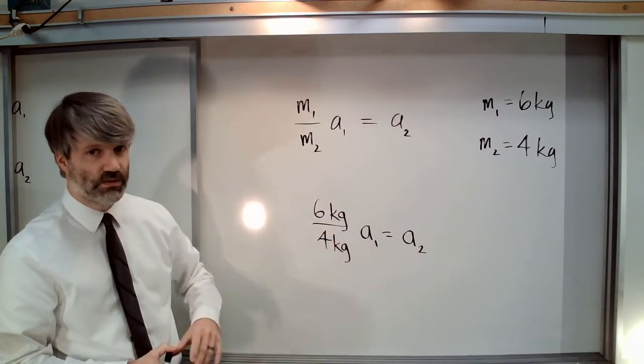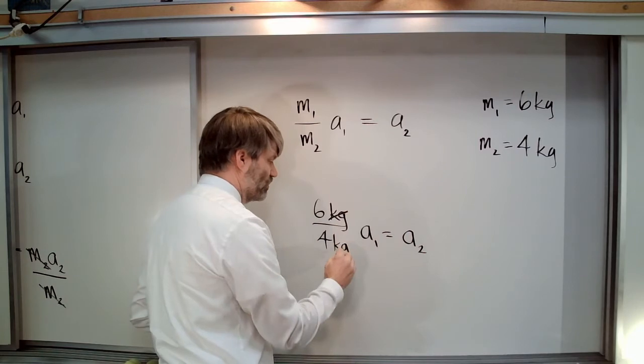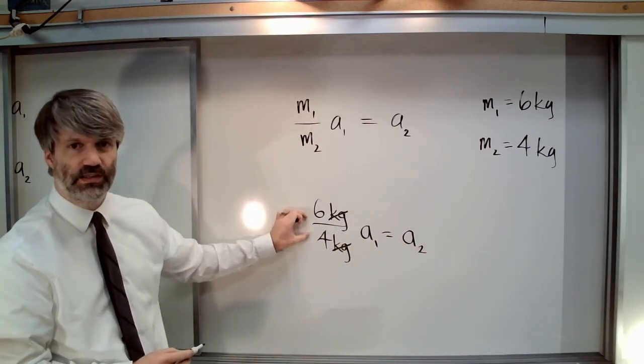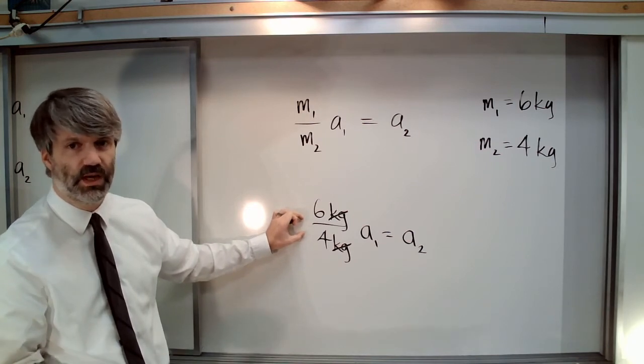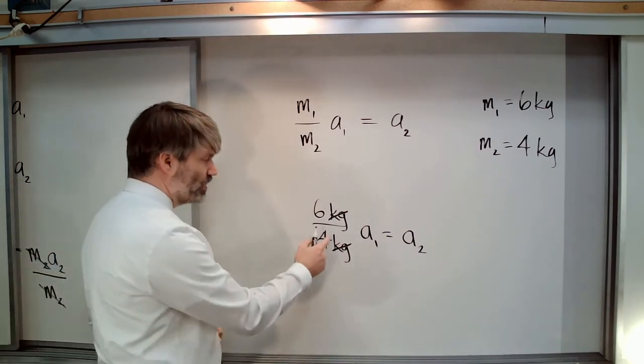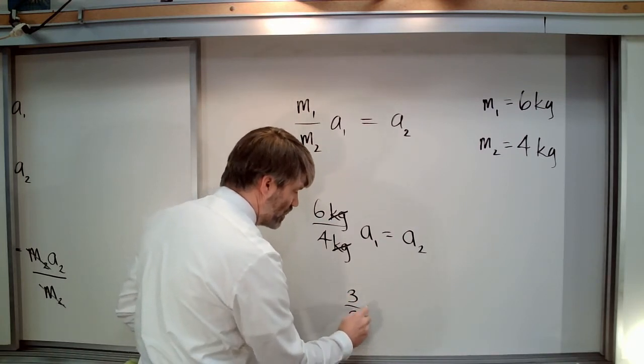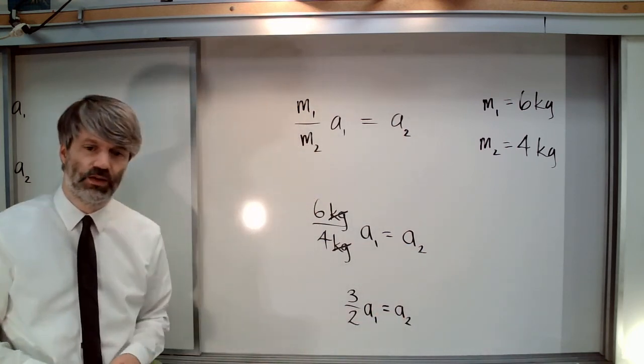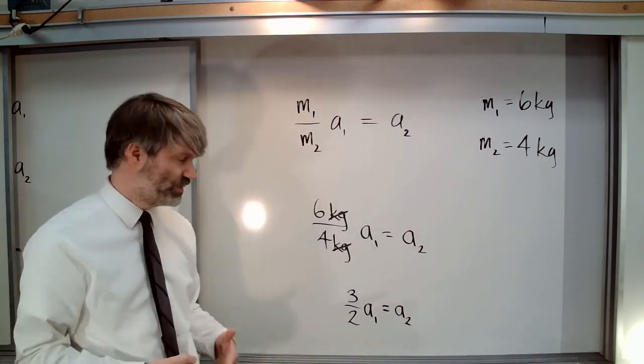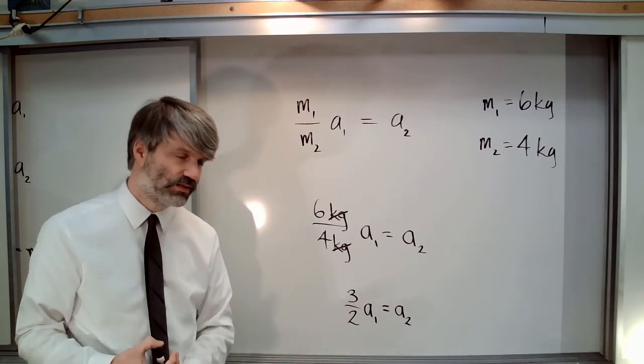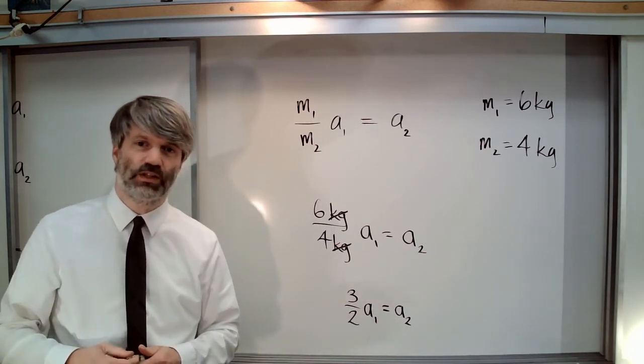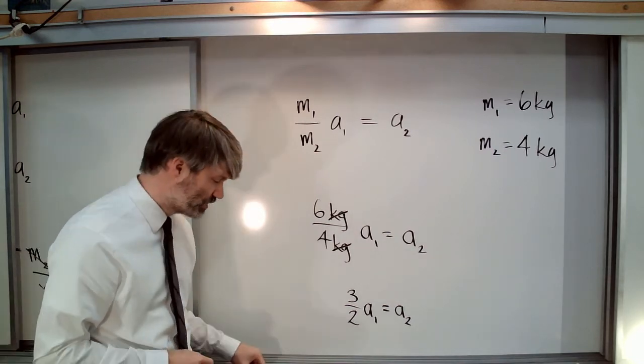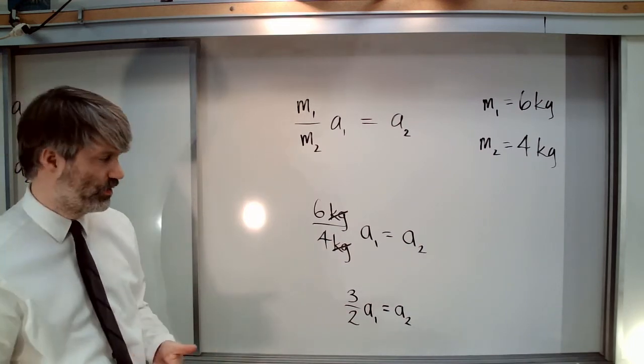Notice that all that's left is the ratio of the masses. So we've got (3/2)A1 equals A2. Anytime we have a ratio of masses that is three to two, the acceleration of the second object is always going to be one and a half times the acceleration of the first object. You can see this if we just choose different values for the masses.